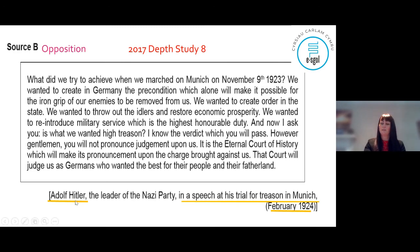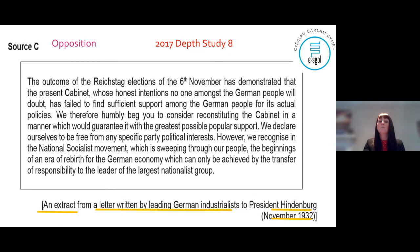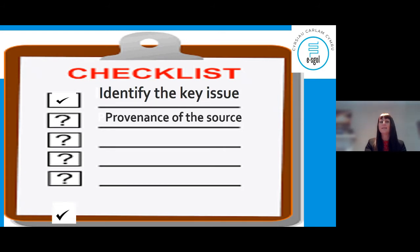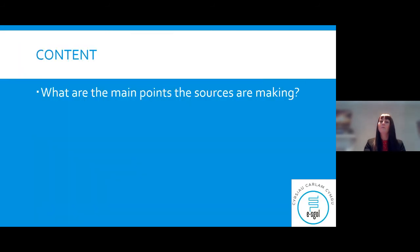Going back to the checklist — yes, we have highlighted the provenance of each source. We know where they come from and those are the bits of information we'll use in our write-up. Now with regard to content, we need to look at the main points the sources are making. The attribution has been read: the date, the authorship, and the audience have all been addressed.